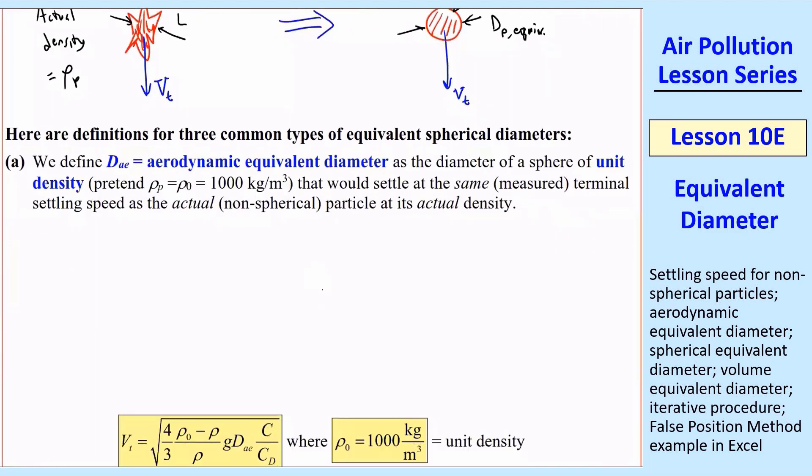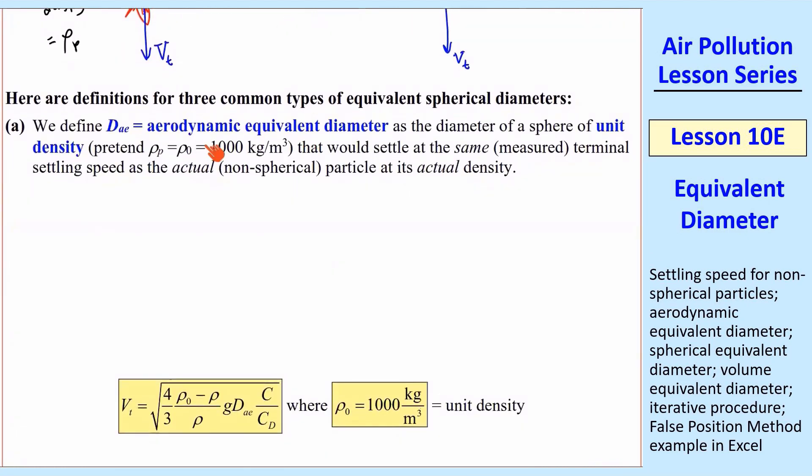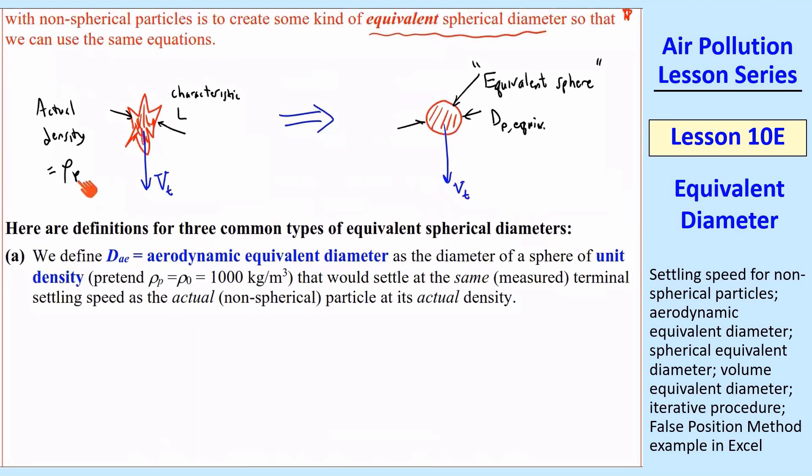I'll talk about all three of them. The first one is called aerodynamic equivalent diameter. It's the diameter of a sphere of unit density, that means 1000 kg/m³. The actual density is probably not unit density, but we pretend it is. So we set that as the particle density, that would settle at the same measured terminal settling speed as the actual non-spherical particle at its actual density. So suppose we measure this vₜ of the actual particles, and we know the actual particle density can be non-unit density, but we create in our imagination a sphere that's falling at the same vₜ, but this sphere has a unit density.